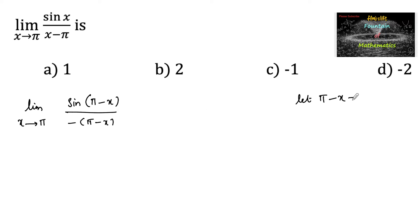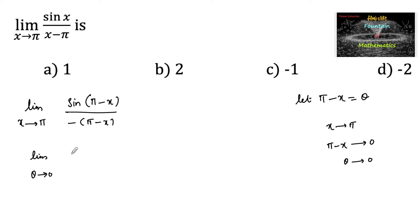Let pi minus x equal theta. As x tends to pi, pi minus x tends to 0, that is theta tends to 0. So our limit becomes limit theta tends to 0 of sin(theta) upon negative theta. Since we know sin(theta)/theta tends to 1 as theta tends to 0, the answer is negative 1. So we go with option C: minus 1.